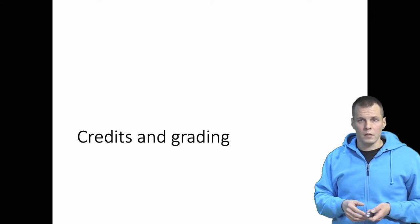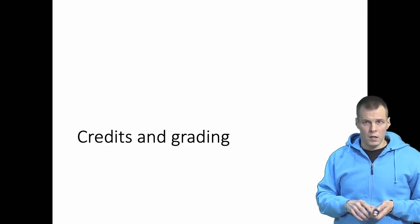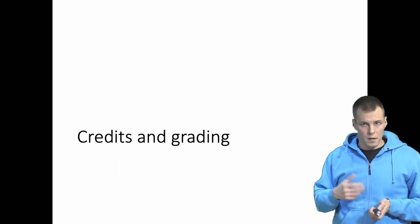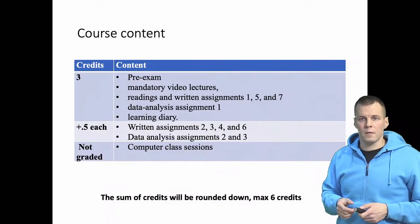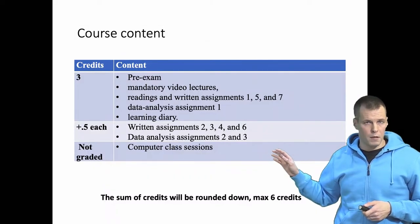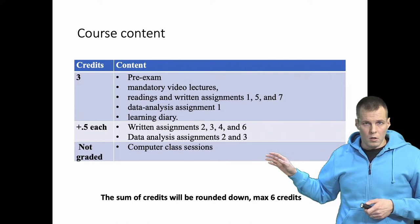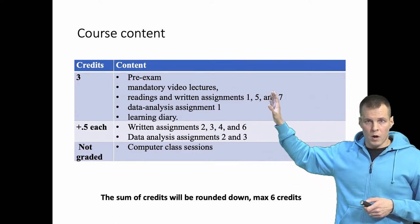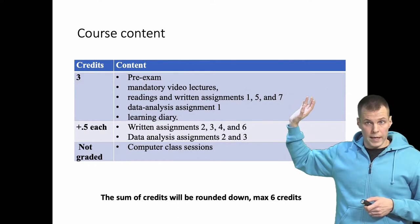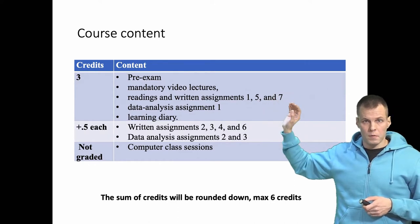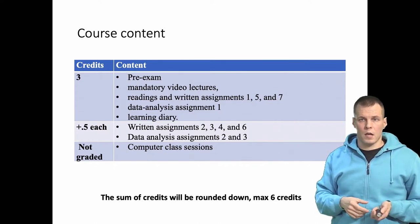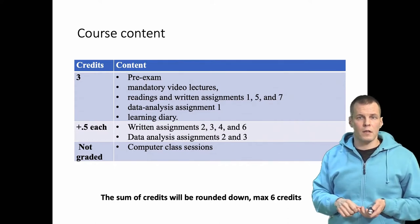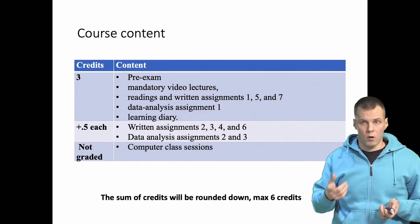Credits and grading: the exact way you get credits depends on the university and is explained on the forum. The amount of credits for this course varies between three and six. You have mandatory parts — when you complete all mandatory parts you will get three credits. Mandatory parts include the pre-exam, the video lectures, reading and written assignments 1, 5, and 7, data analysis assignment 1, and the learning diary.